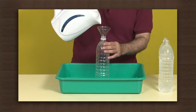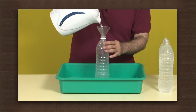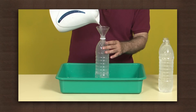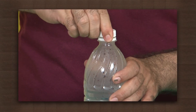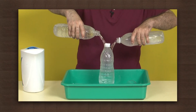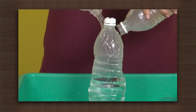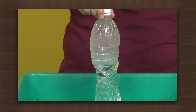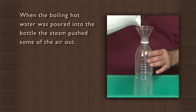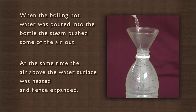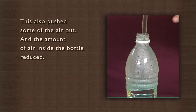Air can crush things. Take some boiling water and pour it into a plastic bottle using a funnel — just a little less than half the bottle. Cap it tightly. Now pour cold water over the bottle and watch it get crushed. When the boiling hot water was poured into the bottle, the steam pushed some of the air out. At the same time, the air above the water surface was heated and expanded. This also pushed some of the air out and the amount of air inside the bottle reduced.